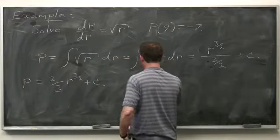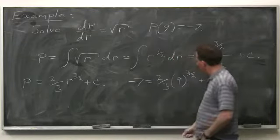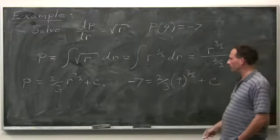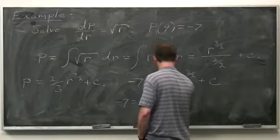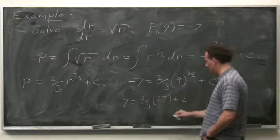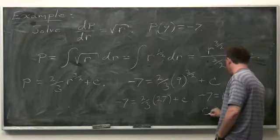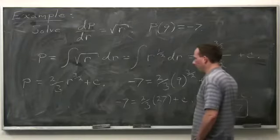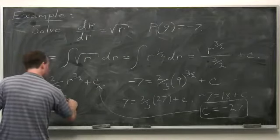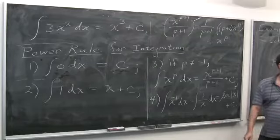We have the data that when r is 9, p is minus 7, so we can solve for c. Nine to the three-halves is 27, so minus 7 equals two-thirds of 27 plus c, giving c equals minus 25. Our solution to the initial value problem is p equals two-thirds r to the three-halves minus 25.